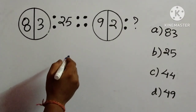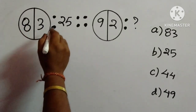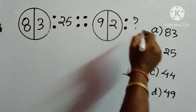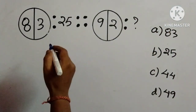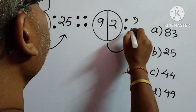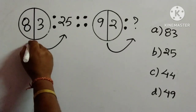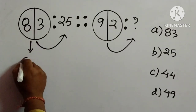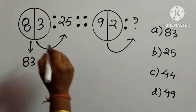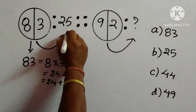The last question is again a number analogy, but it is a little bit different — a figure is given. One circle contains two numbers, 8 and 3, is to 25; equal to another circle containing two numbers, 9 and 2, is to what? We have to find out this number; four options are given. We try to get 25 from 8 and 3. If we multiply the digits: 8 into 3 is 24, and 24 plus 1 is 25, which is given.